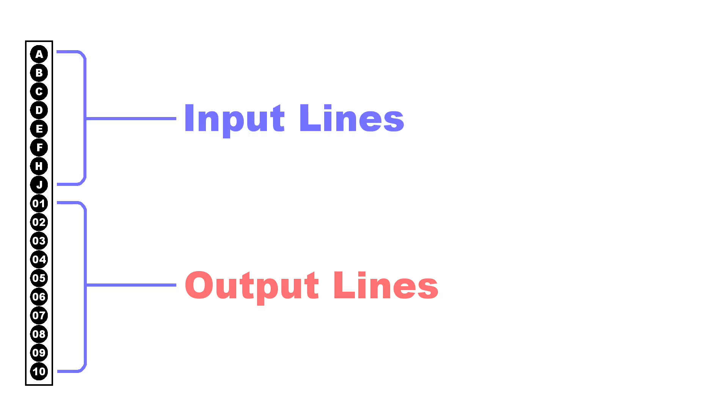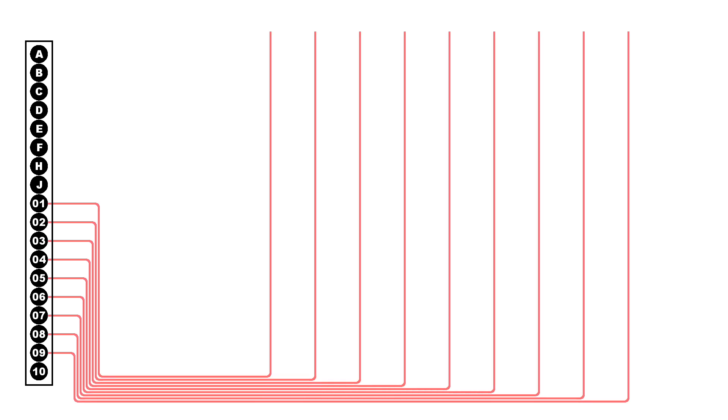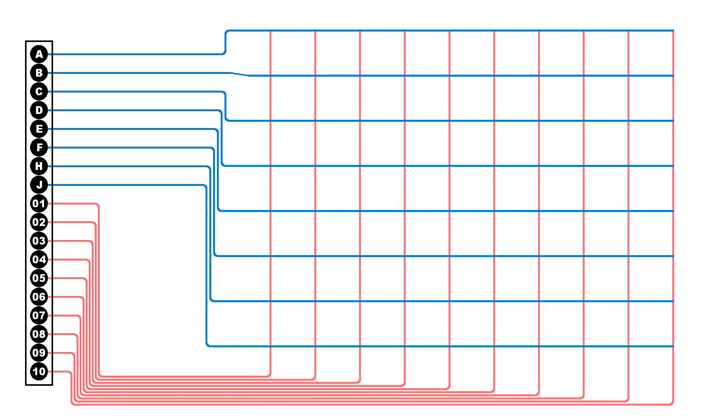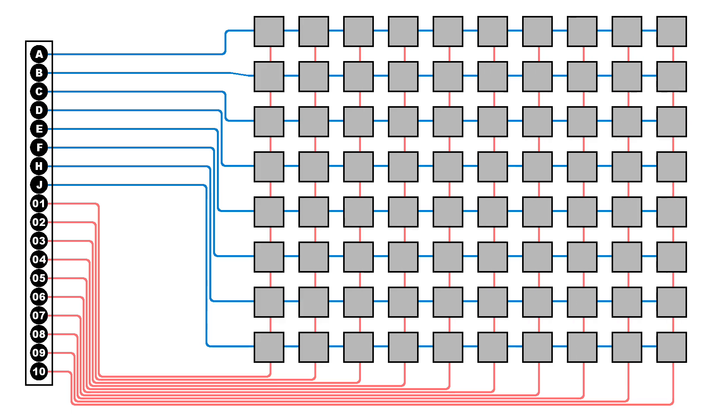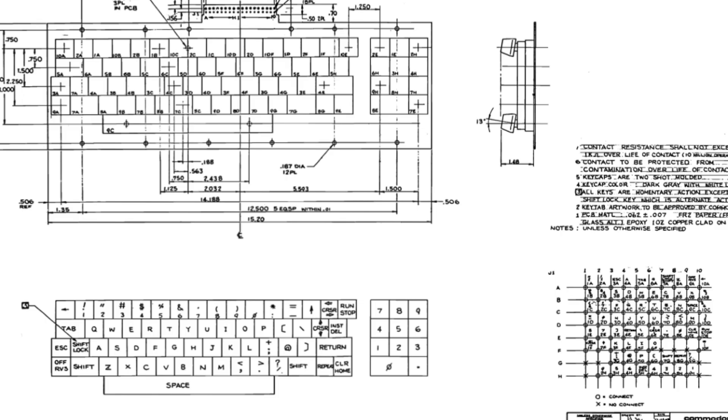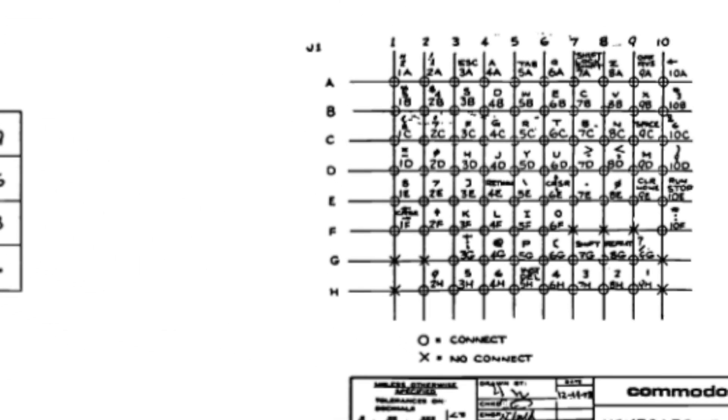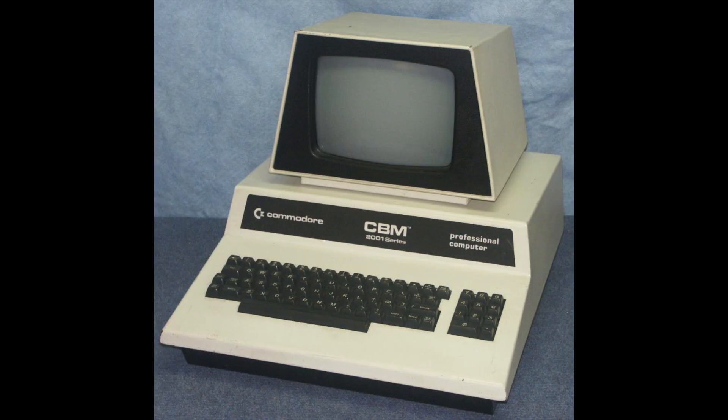If we take a look at the keyboard connector, it can be broken up into two parts. You have output lines that send signals to the keyboard and then input lines that receive signals back from the keyboard. These are all laid out in a grid like this. And then at the intersection of each input and output line, there's a key. Now, I can't tell you at this point which keys are which on this grid.